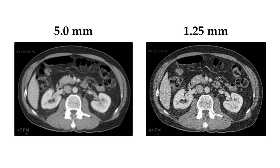The image to the right is the same slice of the same patient, but the image was reconstructed with very thin slices — 1.25 millimeters. This may be giving us more information, but the image noise is so bad that it ruins the appearance of the image. And that's why when we're viewing axial images of the patient's abdomen, we would generally look at them with five millimeter slices.